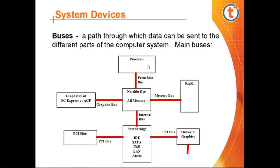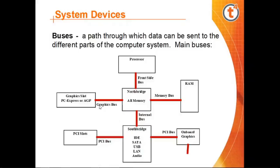The main buses are: the front side bus, connecting the processor and north bridge; the memory bus, connecting north bridge to RAM; and the graphics bus, connecting to the graphics slot, which may be PCI Express or AGP. The south bridge controls the IDE, SATA, USB, LAN, and audio connections.